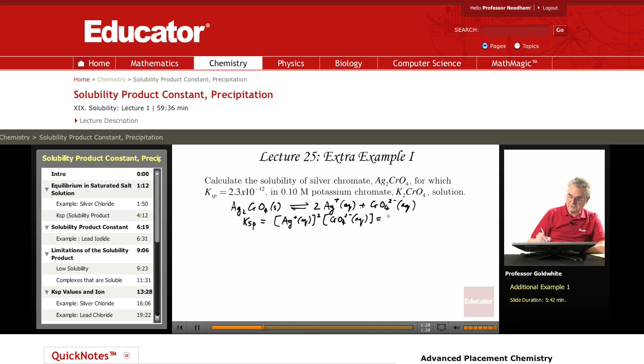And that value is 2.3 times 10 to the negative 12. However, we don't just have water in the solution for which the problem is posed. We have potassium chromate. Potassium salts are soluble and fully ionized, and so we have quite a lot of chromate in solution already before we start to dissolve the silver chromate.